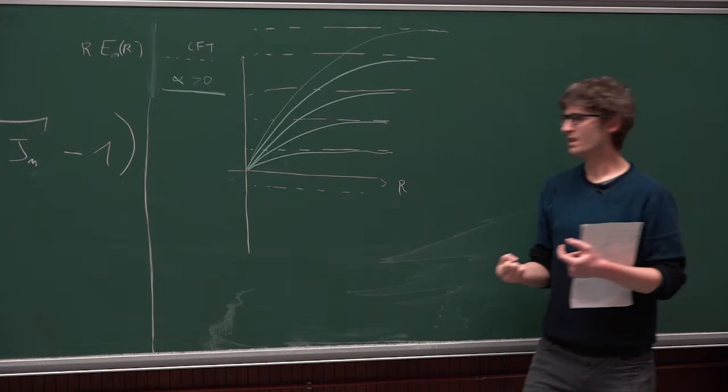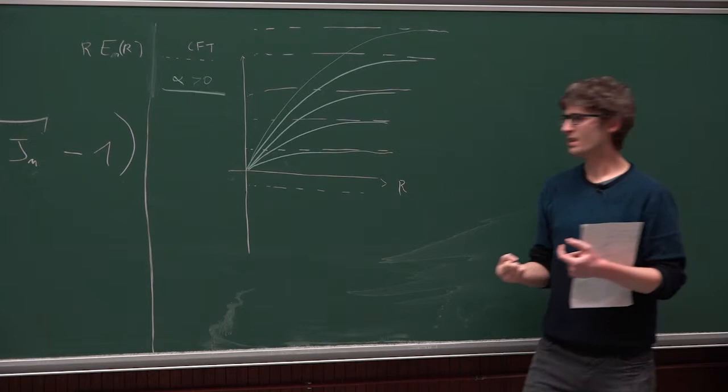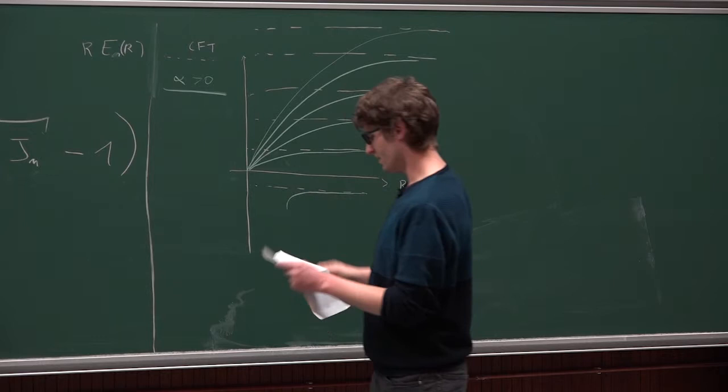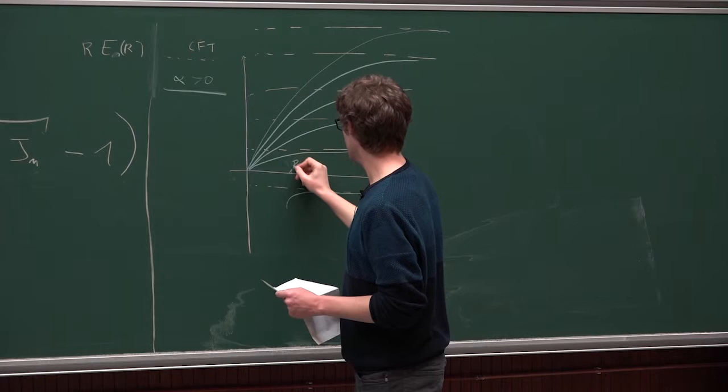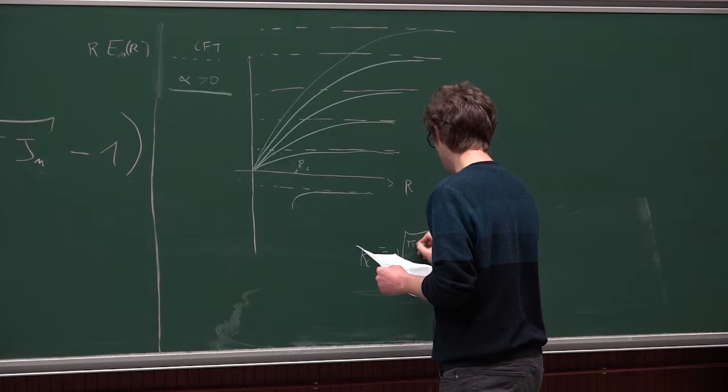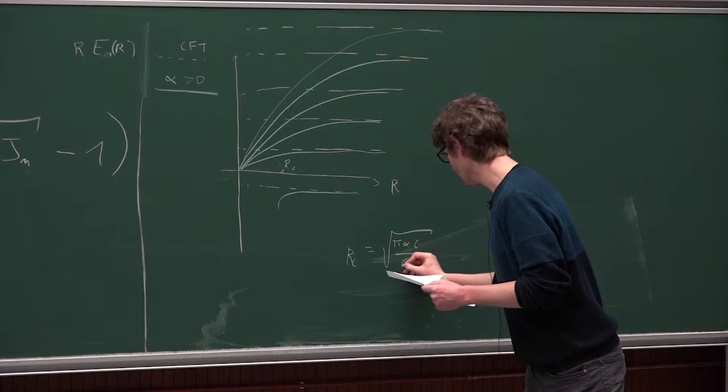And this theory will not be controlled by a UV fixed point. Because if you put a theory on a finite cylinder and you shrink the cylinder, you are inspecting the UV of this theory. So, for a normal quantum field theory, you will see that it would scale like a CFT. And so in this case, if you have a negative level, so this level will also hit some finite value of R that depends on alpha.